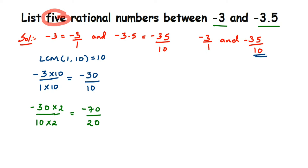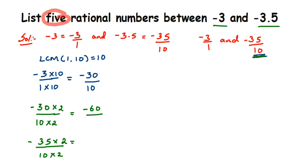For minus 35 by 10, we also multiply numerator and denominator by 2 — we use the same number so the denominators stay equal. This gives minus 70 by 20. So now we have minus 60 by 20 and minus 70 by 20.